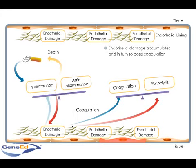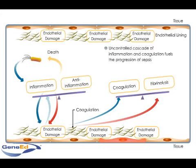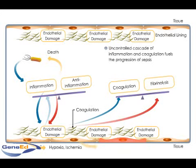This cycle of uncontrolled inflammation and coagulation fuels the progression of sepsis, resulting in hypoxia, widespread ischemia, organ dysfunction, and ultimately death for a large number of patients.